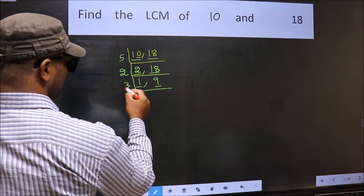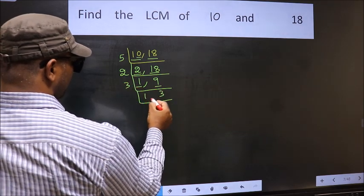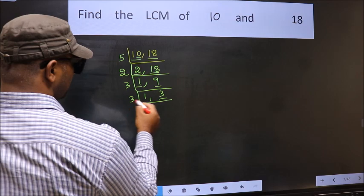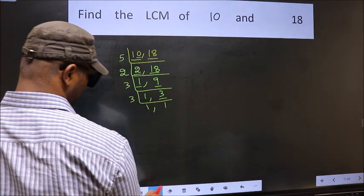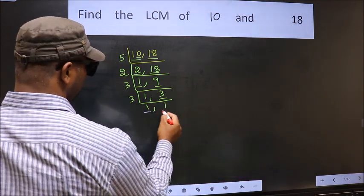9 is 3, 3 is 9. Now we have 3. 3 is a prime number so 3, 1 is 3. So we got 1 in both the places.